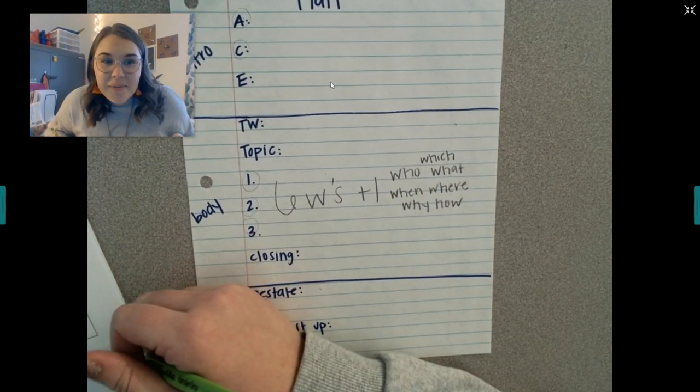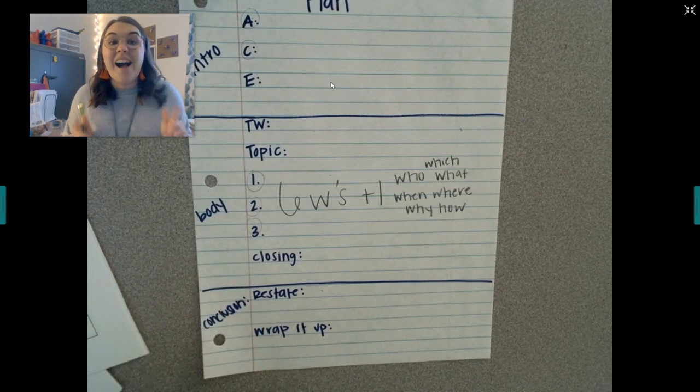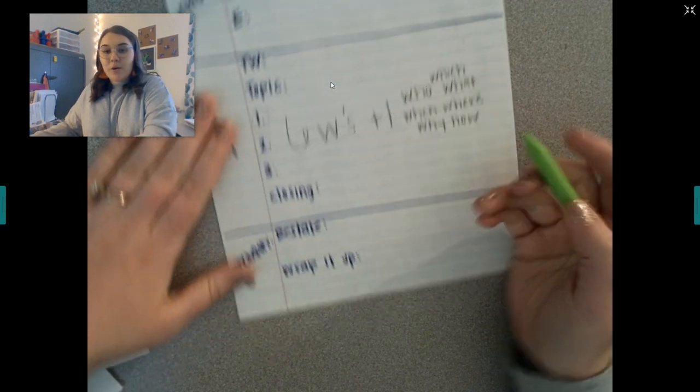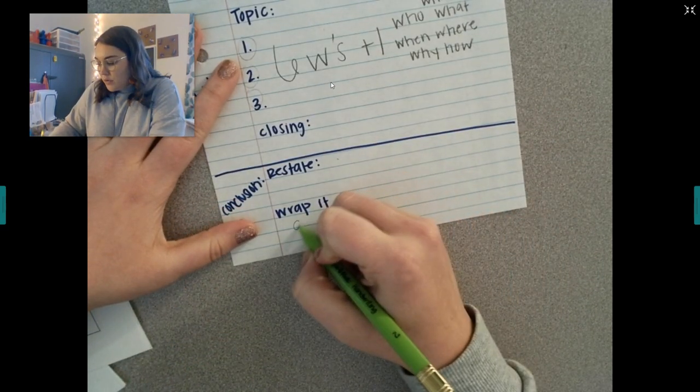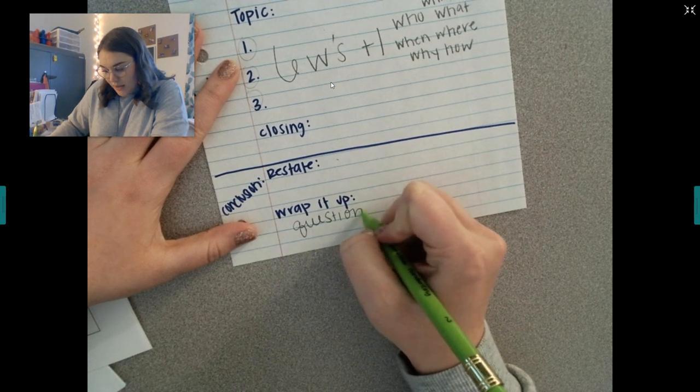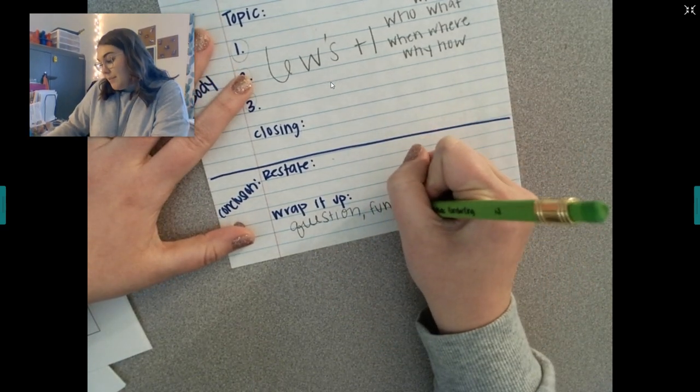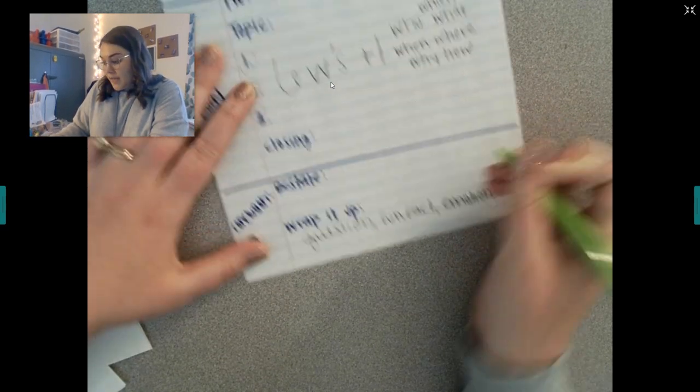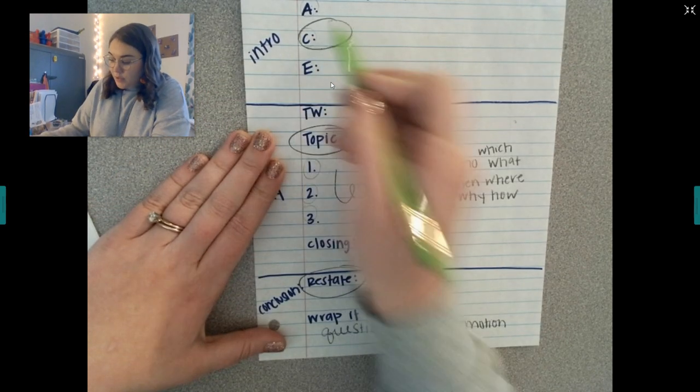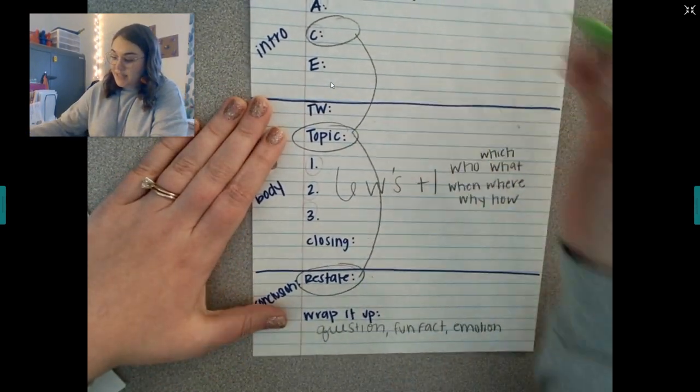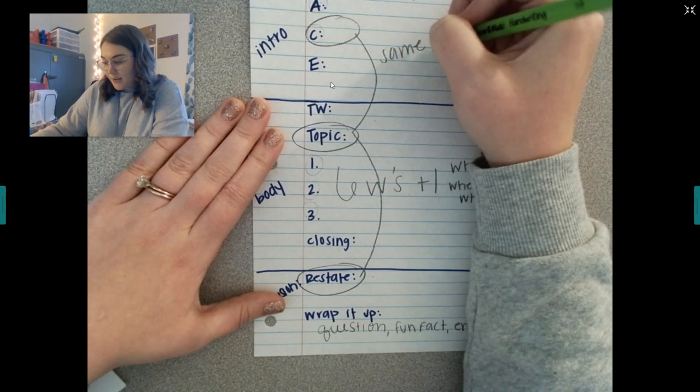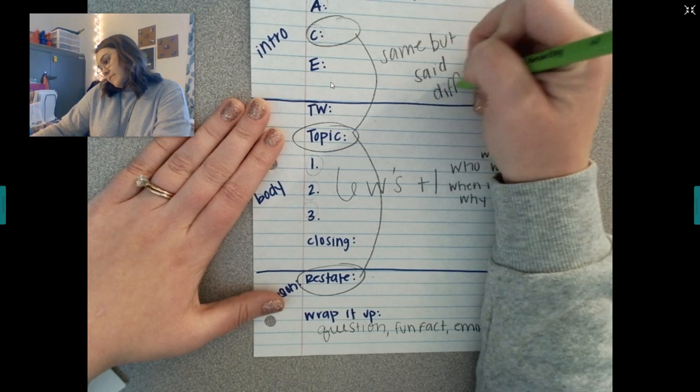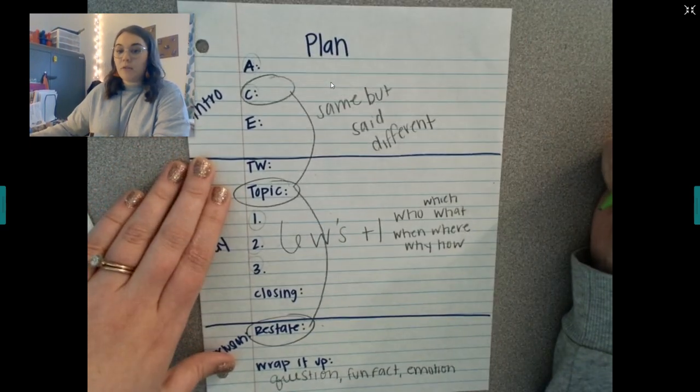So you guys, please try your very best because I know that y'all are incredible writers, but I want to be able to show her that. All right, friends, I know that y'all can do this draft. I know a lot of you were having trouble on your wrap it up. I would do like a question here. I might do a fun fact. I might do something with emotion in it. All of those—restate topic, central idea—those are all three basically the same but said different.